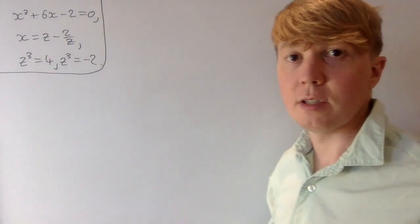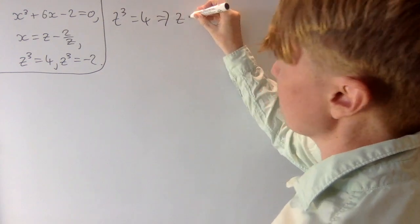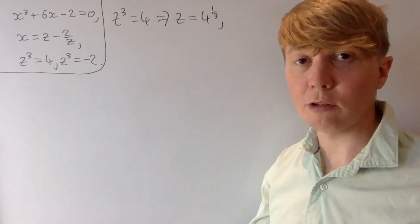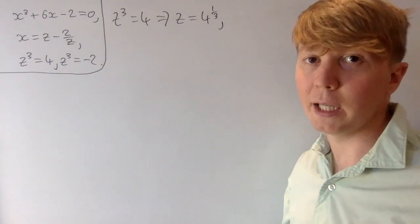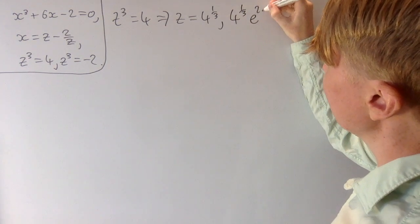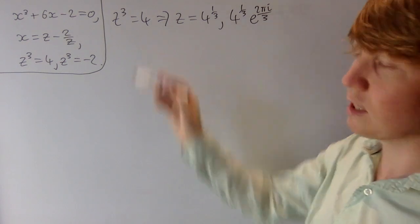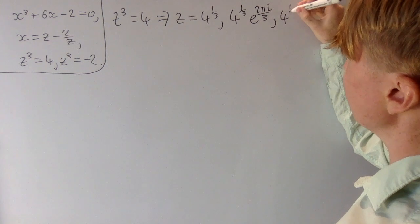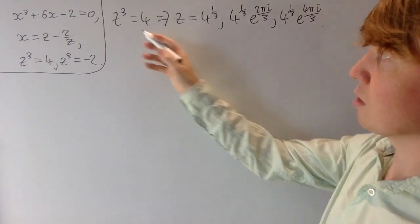Now we can find our solutions in z. When z cubed equals 4, we take cube roots and one solution is z equals the cube root of 4, or 4 to the power of 1 third. But this isn't the only solution if we allow complex solutions. We could also multiply by any cube root of unity, giving 4 to the 1/3 times e to the 2πi/3, and 4 to the 1/3 times e to the 4πi/3 as further valid solutions to z cubed equals 4.